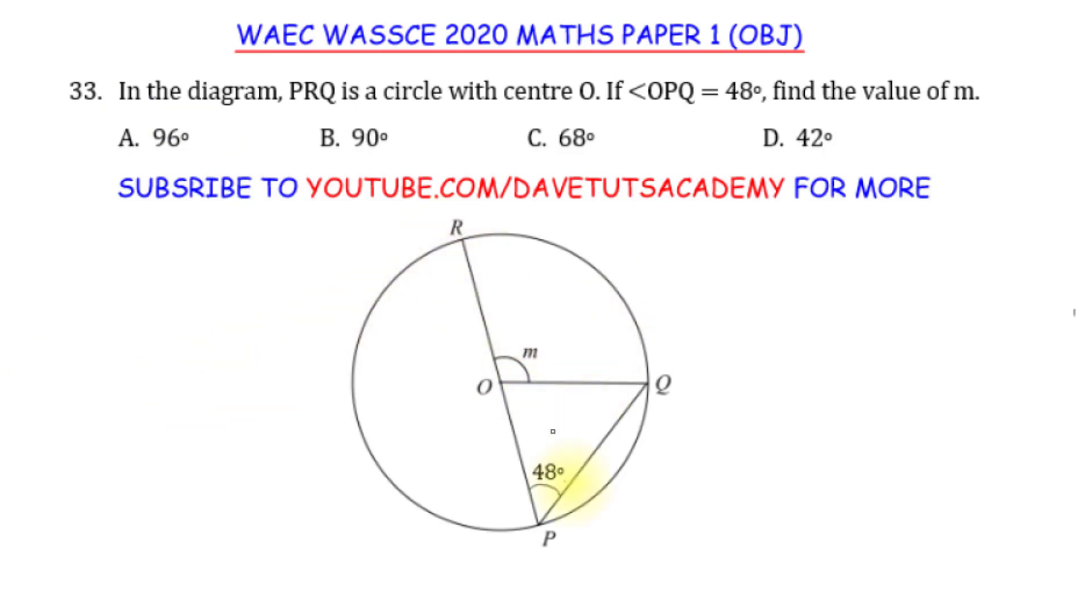Now, looking at this, we will identify that OQ and OP both constitute the radius of this particular triangle OPQ. And because they are both radii, we can see that they are forming an isosceles triangle. OQ, line OQ is equal to line OP because these are radii of the circle.